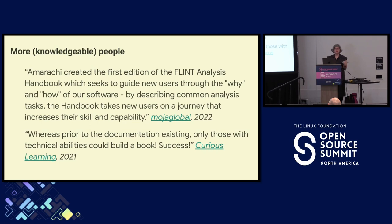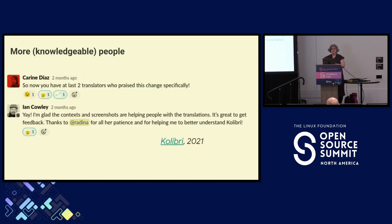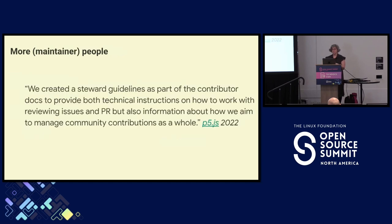For OpenMS, they were able to make historically underrepresented individuals coming on board as new contributors more successful because they had a new manual. Documentation helps users build the skills they need to use the project successfully — here you've got the why and how of the software from Mojo Global. Prior to this documentation existing, only those with technical abilities could use this tool, which helps make textbooks.